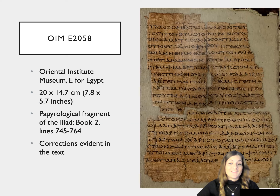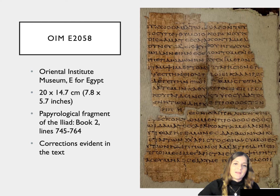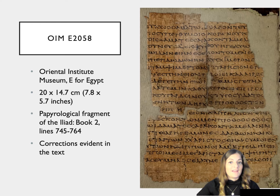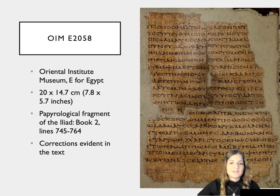Our starting point for this lecture is this really truly lovely little bit of papyrus from the Oriental Institute. Its official name is OIM E2058 — OIM for Oriental Institute Museum, and E for Egypt. It's not large, roughly the size of a postcard, and exhibits a really nice clear handwriting with rounded letters that is pretty typical for literary texts.